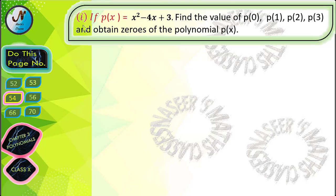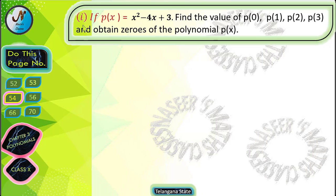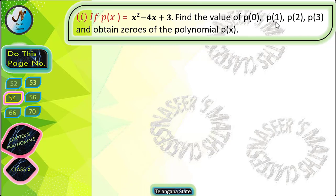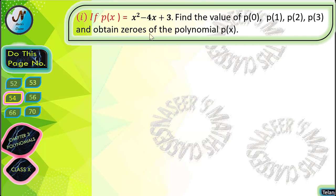We are going to solve exercise number 54, Chapter 3 Polynomials. It is given that if p(x) = x² - 4x + 3, find the values of p(0), p(1), p(2), p(3), and obtain the zeros of the polynomial p(x).